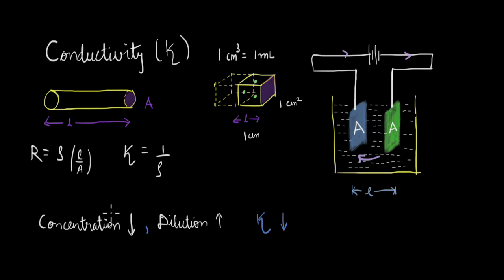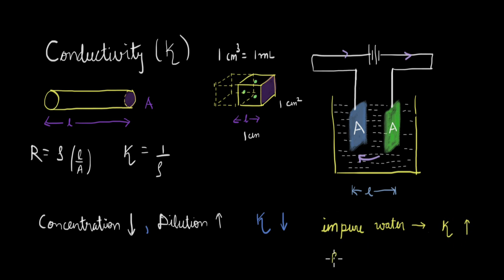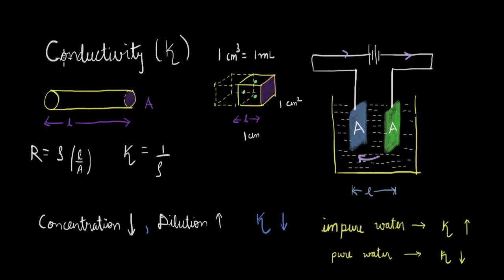This idea is used in water purification systems. Impure water contains impurities like salts, which are good electrolytes, meaning more ions and therefore higher conductivity. Conversely, as water is purified, the salts and impurities — the source of ions — are removed. With fewer ions in solution, conductivity decreases as the water becomes more pure. So measuring conductivity is a quick and easy way to monitor the water purification process. This is the application based on the relationship between conductivity and concentration.